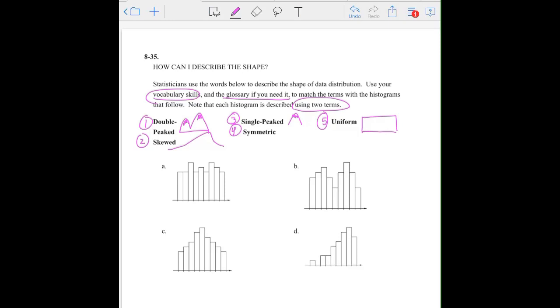So if you look at letter B, we can definitely say it's a double peak. Because if you look at it, there's two peaks into the graph. So that one's double peaked. And then I would say it's symmetrical. Because if I split it down the middle, it's about the same on both the left and the right side of the graph. So go ahead, pause the video, and describe each of the graphs. Don't forget that it is using two terms for each graph.